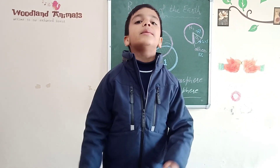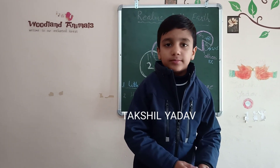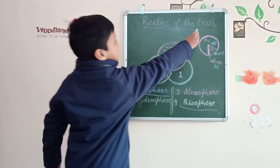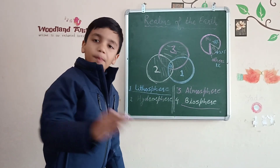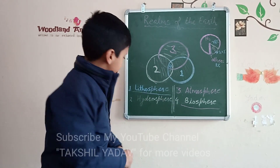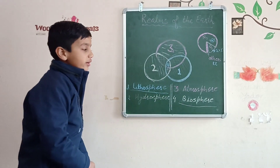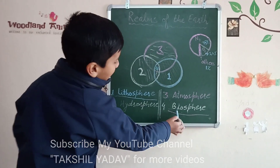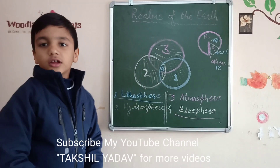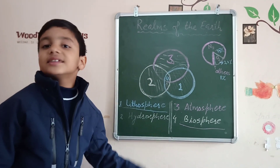The realms of the earth are the parts of the earth into which it is divided. The earth is divided into four realms or four parts. They are lithosphere, hydrosphere, atmosphere and biosphere. Now let us understand them.